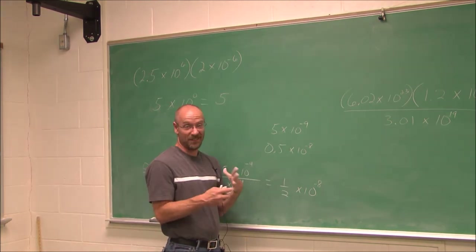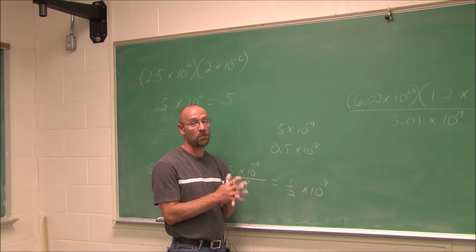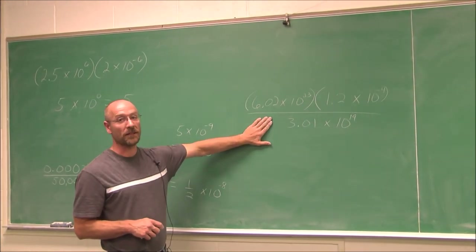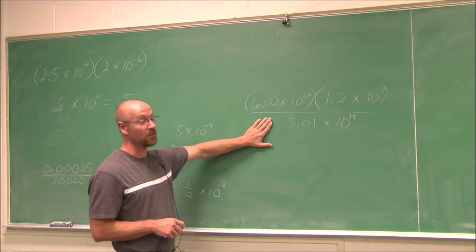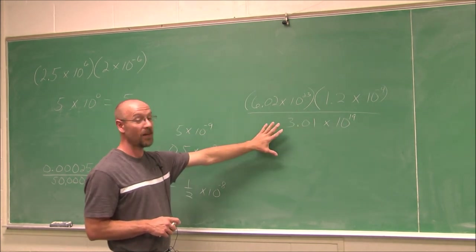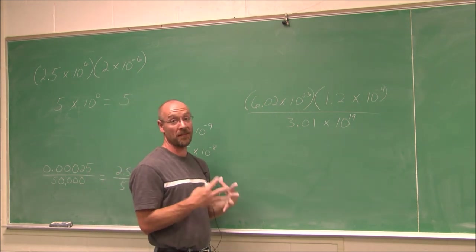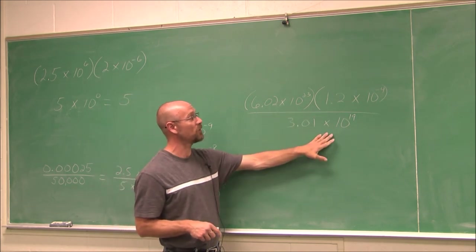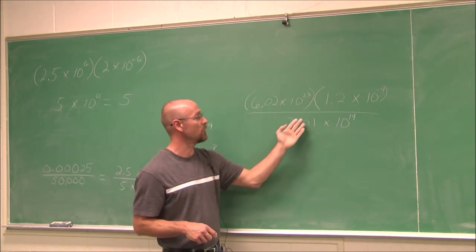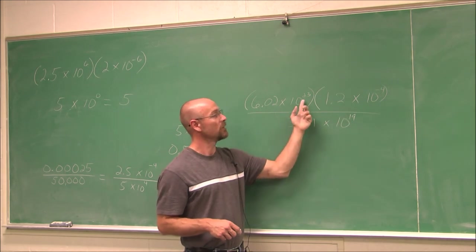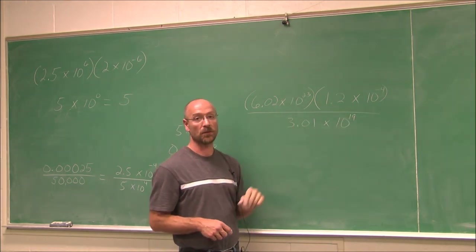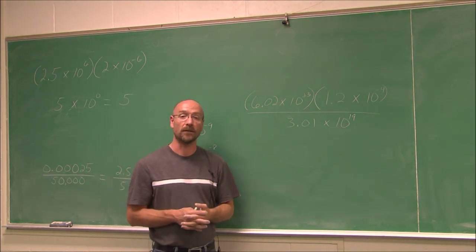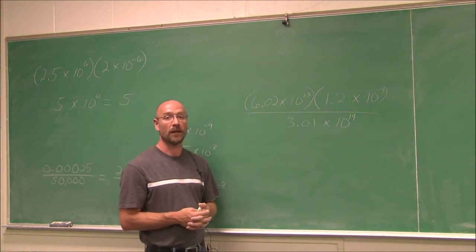Hopefully that makes sense — it'll come with practice, lots of practice. Try the practice problem on your own: don't be intimidated by the values, it works out to a nice number with a decimal. Deal with the coefficients first, then deal with the factors of 10 using your rules of exponents. This has been section 7.1 with the appendix on scientific notation. Thank you for watching.